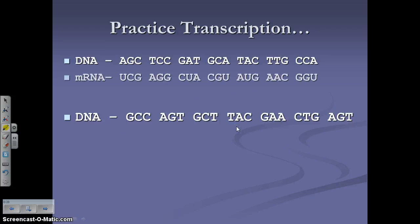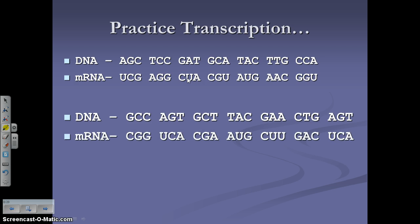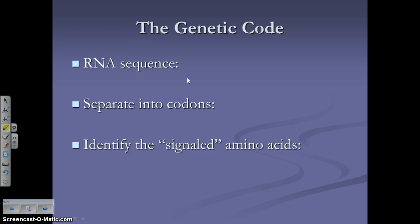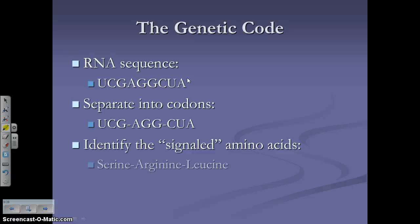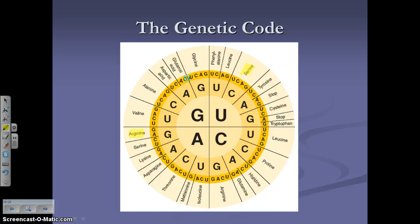Let's check your mRNA sequence. A's pair with U's, G's with C's, C's with G's, and T's still pair with A's — but everywhere you had an adenine in DNA, you now have a uracil in RNA. We separate that RNA sequence into codons of three bases each. For example, UCG is the first codon, signaling for serine; AGG is the next, signaling for arginine. You can use a codon chart, starting in the middle and working outward, to figure out which amino acid any codon signals for.